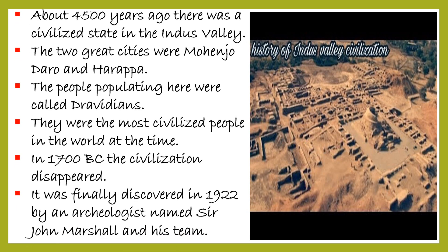Let's see the history of the Indus Valley Civilization. It is said that about 4500 years ago, there was a civilized state in the Indus Valley. The two great cities were Monjodaro and Harappa. The people populating here were called Dravidians, and they were the most civilized people in the world at the time. In 1700 BC, the civilization suddenly disappeared, and it was discovered in 1922 by an archaeologist named Sir John Marshall and his team.